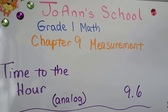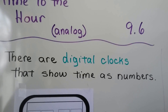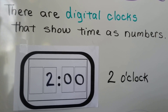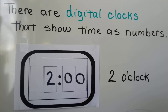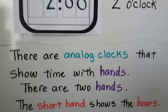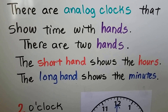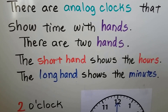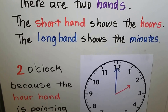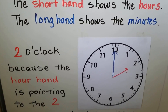This is lesson 9.6. There are digital clocks that show time as numbers — this is 2 o'clock. There are analog clocks that show time with hands. There are two hands: the short hand shows the hours, and the long hand shows the minutes.